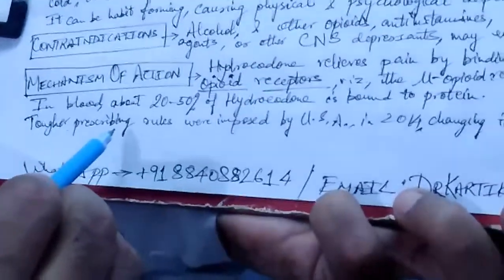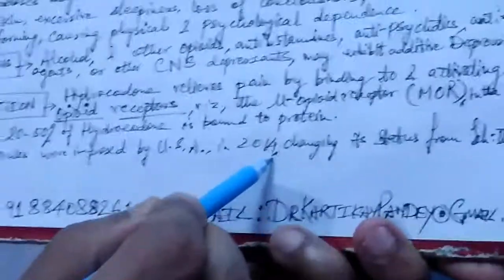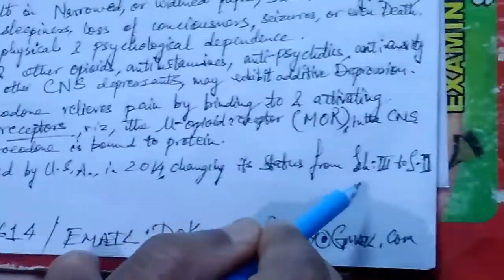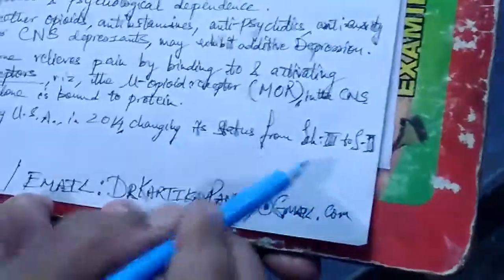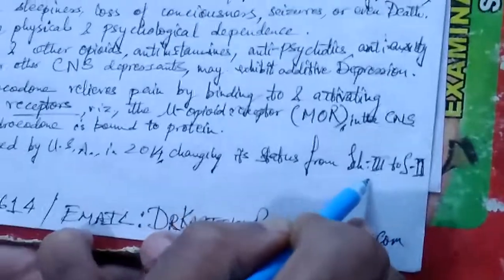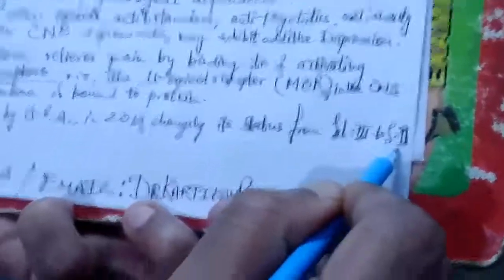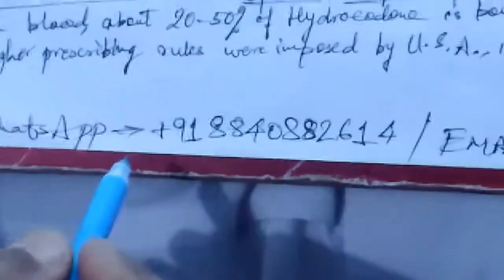Tougher prescribing rules were imposed by the US government in 2014 by changing hydrocodone's status from a Schedule III drug to a Schedule II drug. This was a correct and understandable decision, imposing stricter prescribing restrictions in light of the serious untoward effects that such opioids have on humans.